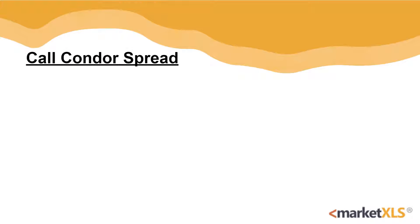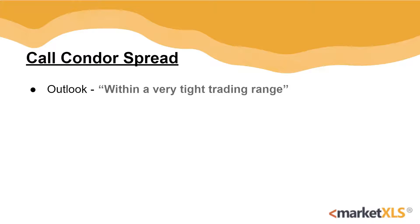So without any further ado, let's start with the topic. A Call Condor Spread is best implemented when you expect the underlying security to change very little or remain within a very tight trading range over the life of the options contract.